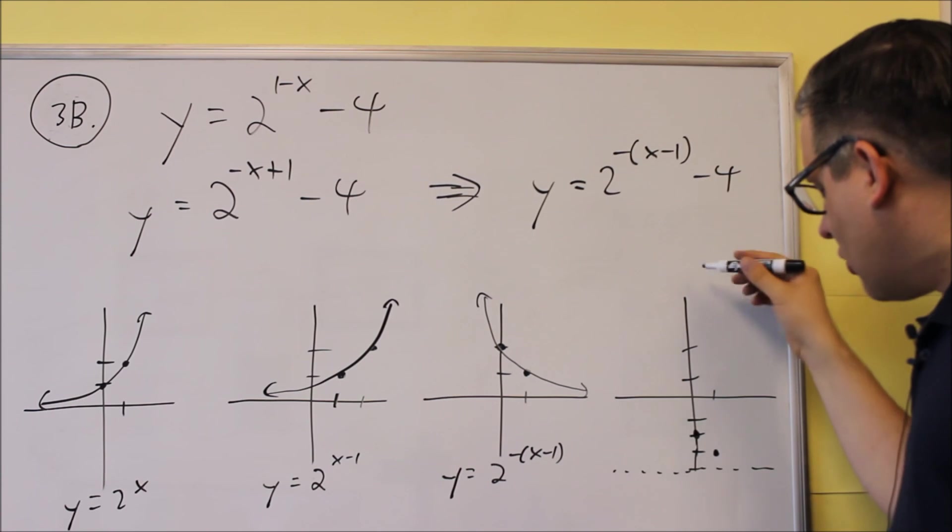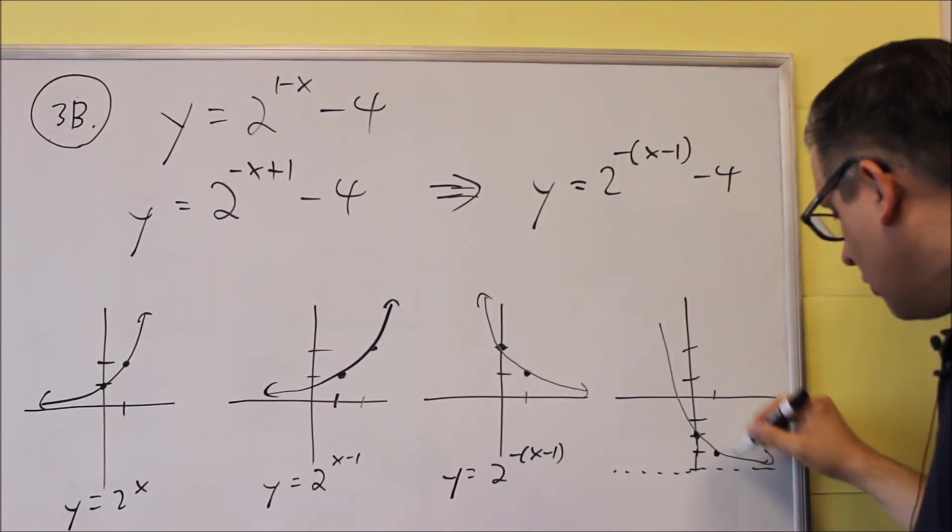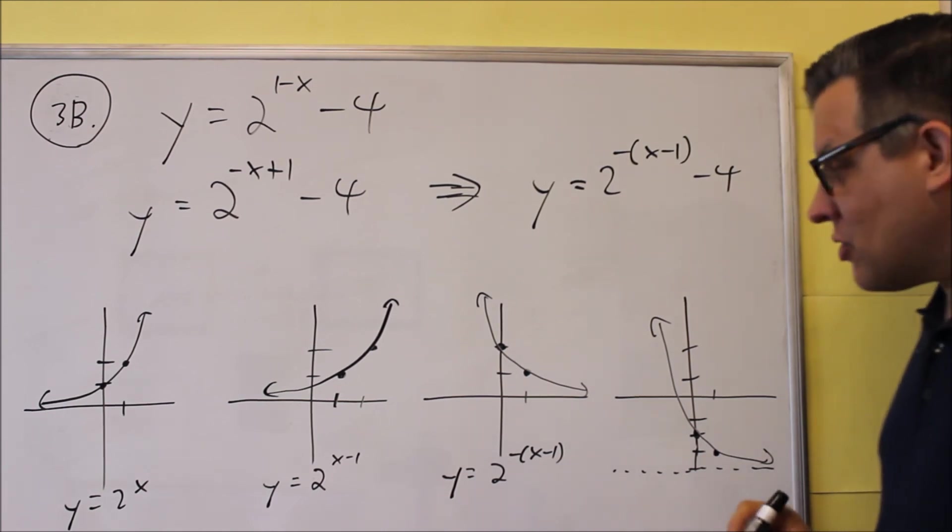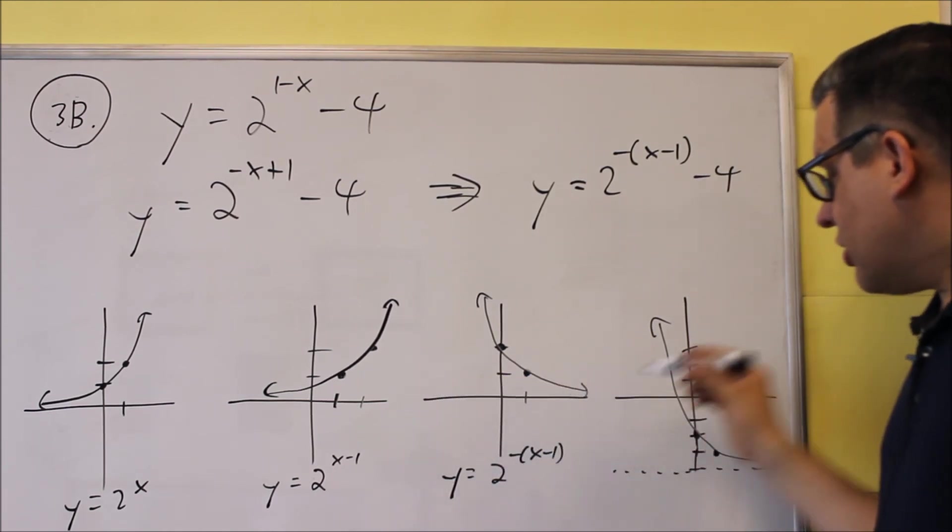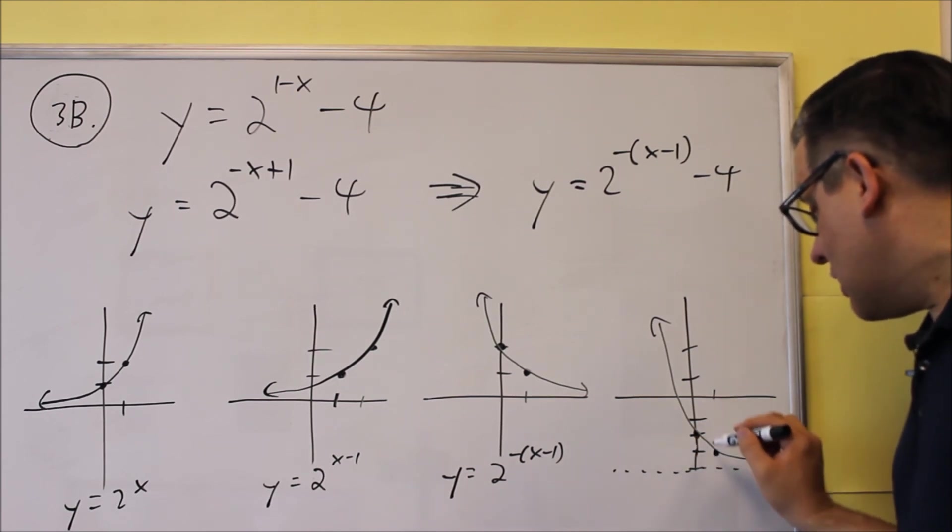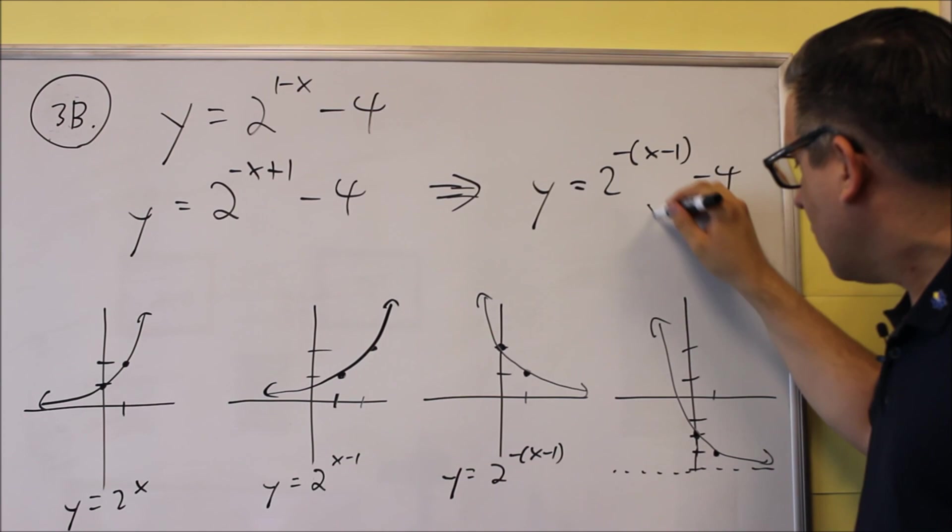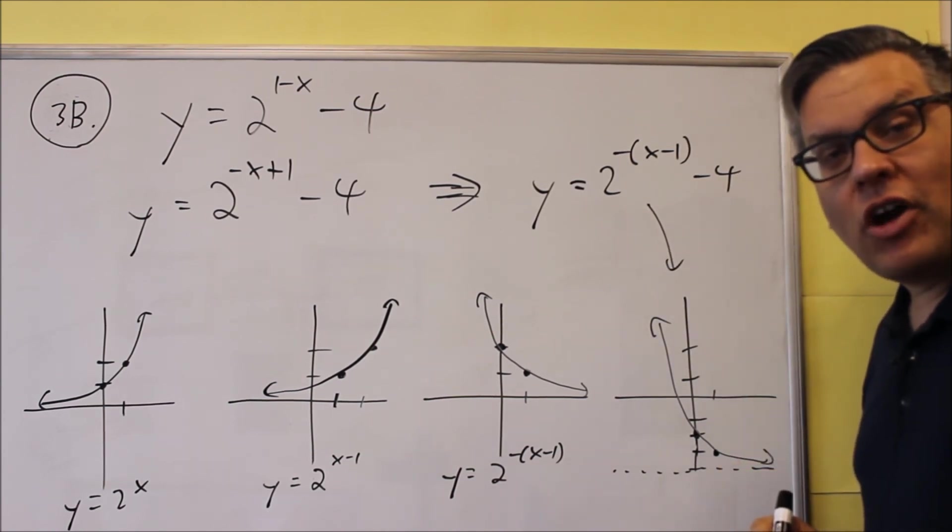So the graph is going to look the same as this, only it got shifted down 4 units, which means the graph itself is going to do something like that. Originally it was at 0, the whole thing got shifted down 4 units, and that's why we have that. These two points also got shifted down 4 units. This right here, that would be your final graph.